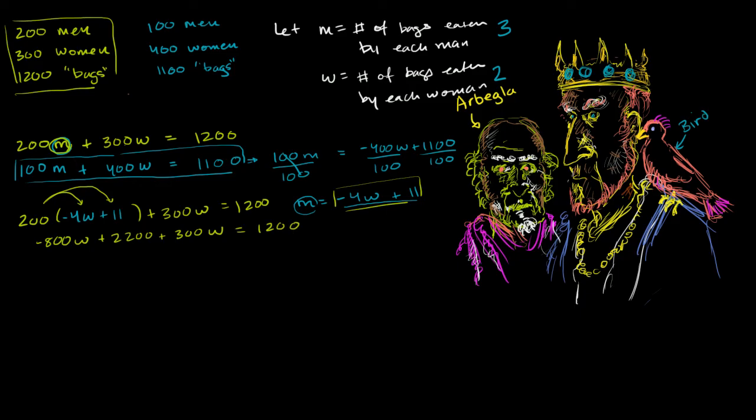Now we just need to solve for w. We first might want to group this negative 800w with this 300w. Negative 800 of something plus 300 of something is going to be negative 500w. And then we still have this plus 2200 is equal to 1200.